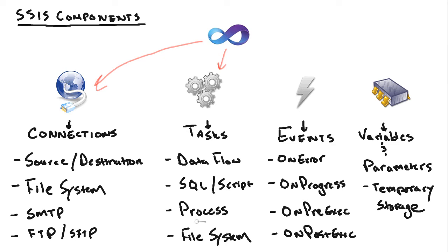We have scripting tasks. We have a process task if we need to shell out a process outside of SSIS or SQL Server. And then we have file system tasks for working with files on the file system — everything from creating files to deleting, moving, and copying files.